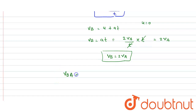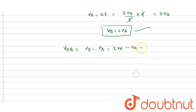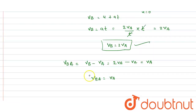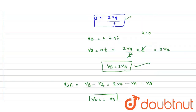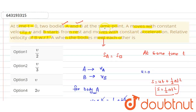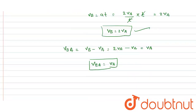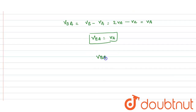The relative velocity of B with respect to A is written as Vb minus Va. Since Vb equals 2Va, this gives 2Va minus Va equals Va. From the question, A moves with constant velocity V, so Va equals V. Therefore, the relative velocity Vba equals V.